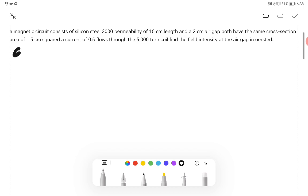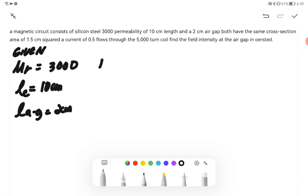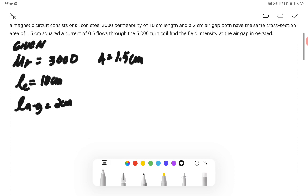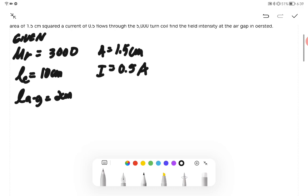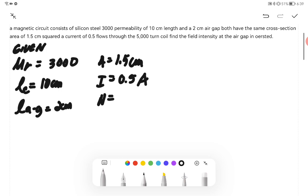Let's write in our given. We have our permeability, or μr, it's 3,000. The length of our core is 10 cm. The length of our air gap is 2 cm. Cross-sectional area is 1.5 cm squared. The current is 0.5 Ampere, and then N is the number of turns, which is 5,000.